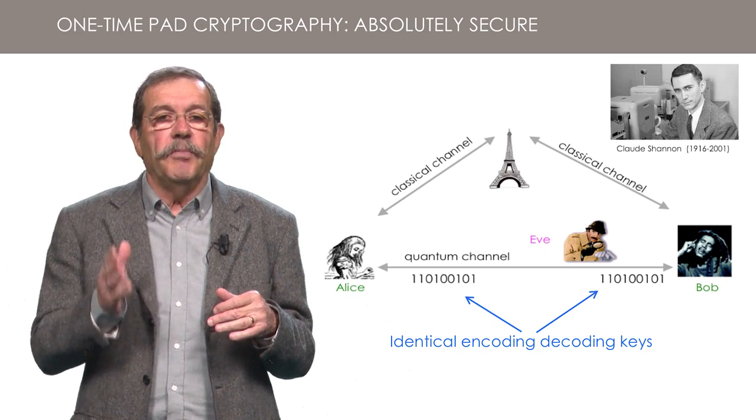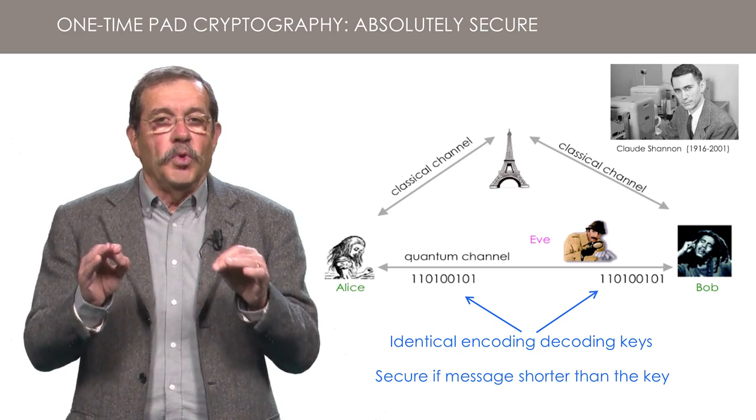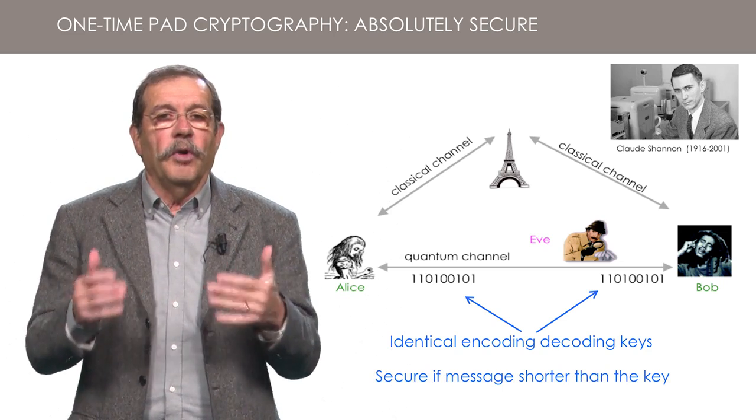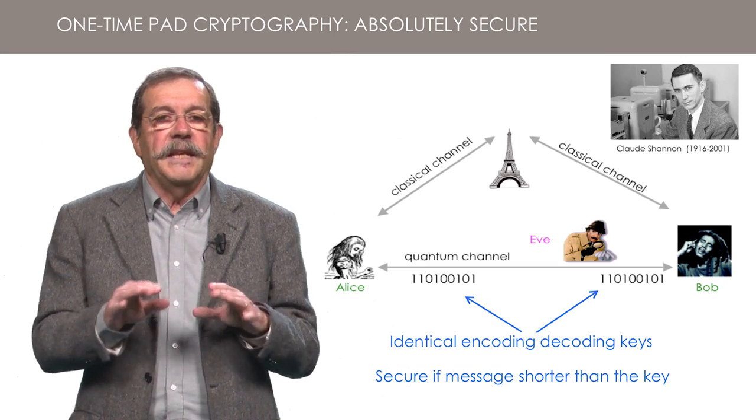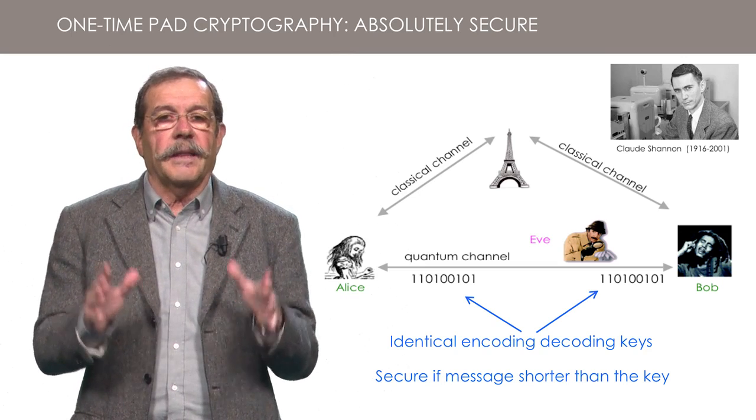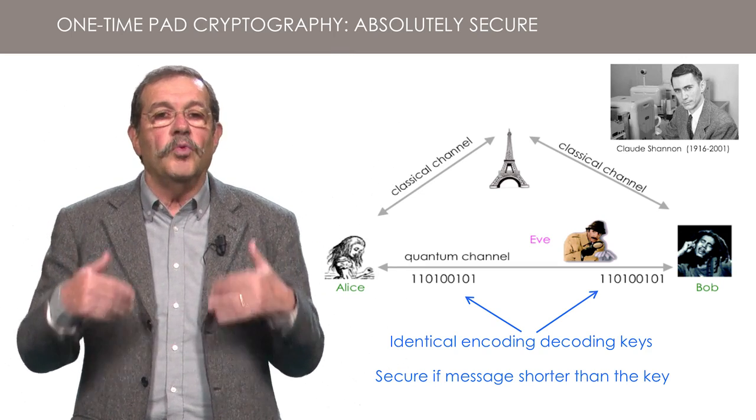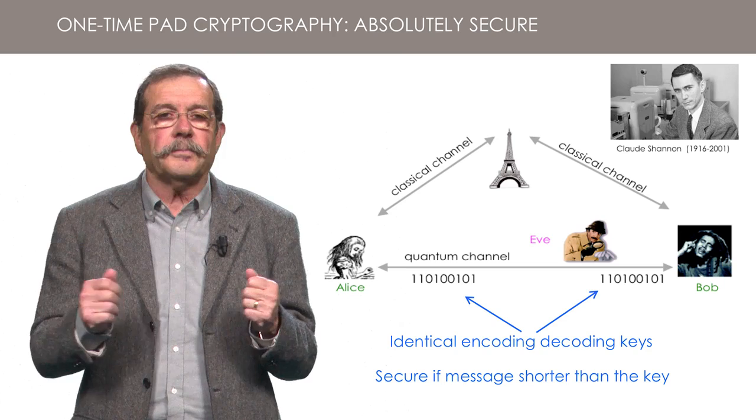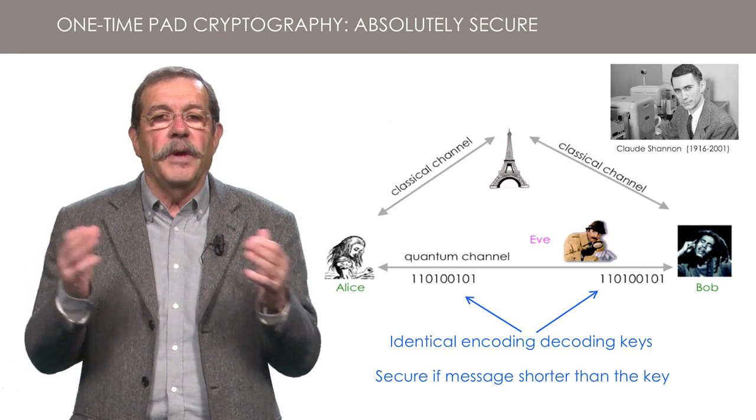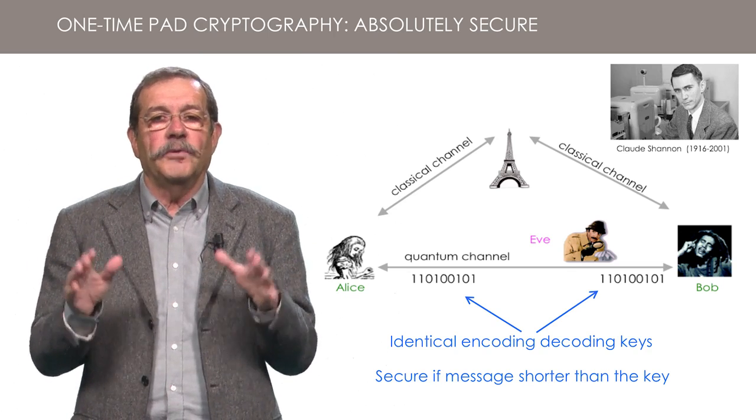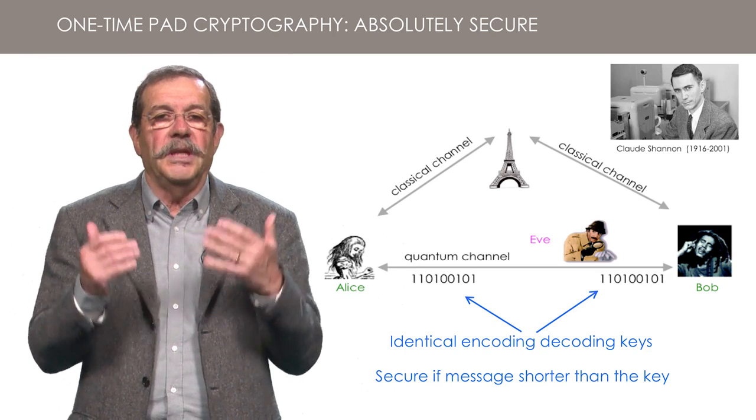In order to guarantee the absolute security, the message must not be longer than the encoding key, to prevent use of regularities to uncover the code. It means that after sending messages with a total length equal to the length of the key, Alice and Bob must renew the key.